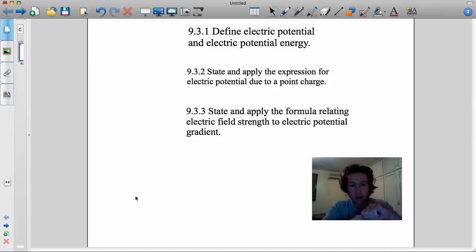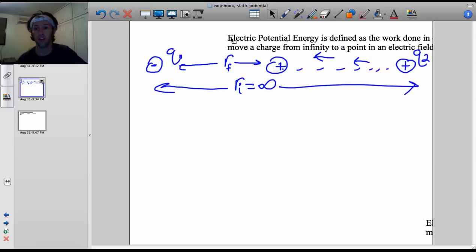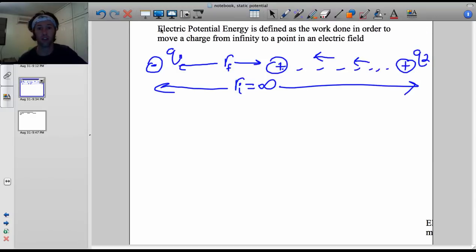If you look at what's going on, we're going to define electric potential and electric potential energy. We are going to apply the expression for electric potential from a point charge, and then we're going to state and apply the formula relating this electric field strength to an electric potential gradient.